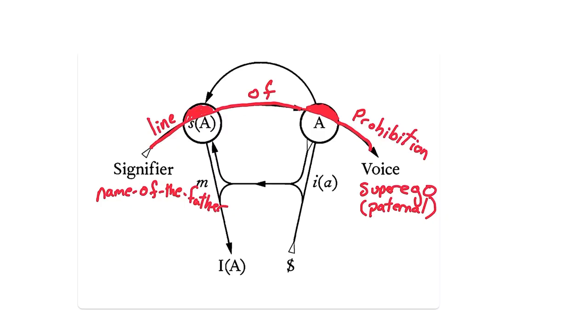Having talked about the superego, we can now ask about the ego ideal and what function it plays. The ego ideal is located at the place where the split subject was originally on graph 1.